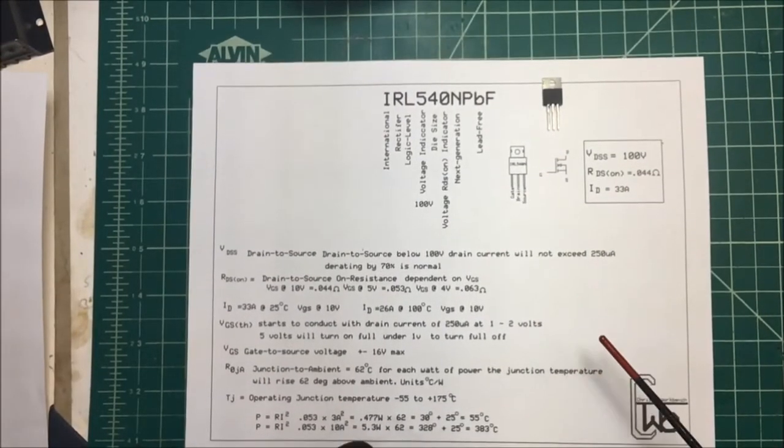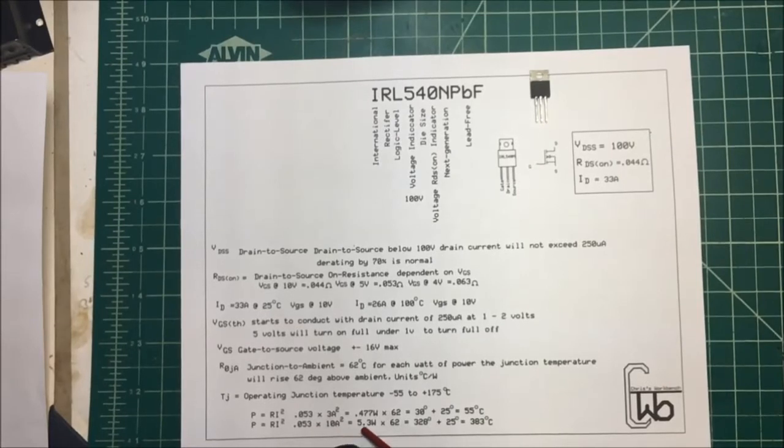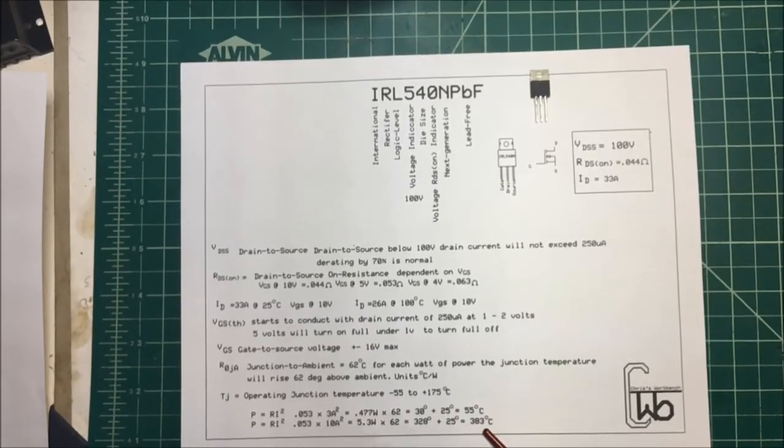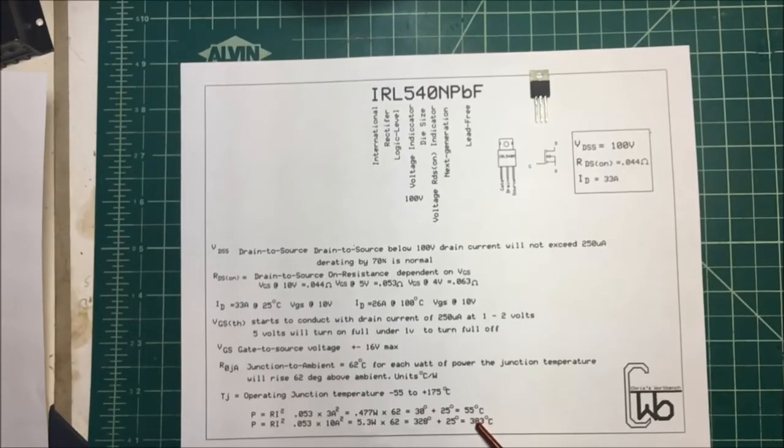But now what happens if I want to go up to 10 amps? Well 10 amps comes out to 5 watts times our 62. That's going to be 328 degrees centigrade above ambient, so it's going to be at 353 degrees centigrade, way over our junction temperature here. So we need to dissipate all that heat out of there. We're going to have to put some heat sinks on or try to dissipate all that heat away from the unit there.